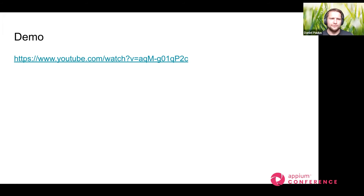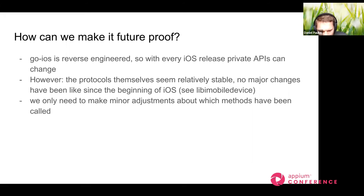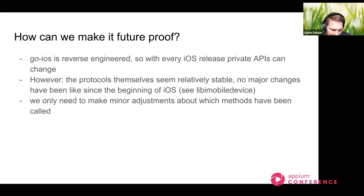How can we make this future-proof? Doesn't reverse engineering mean every iOS release breaks everything? Kind of — with every iOS release Apple changes something and you have to make some modifications. But the positive thing is that the protocols underneath — the property list stuff and the DTX protocol — are relatively stable. I think there have been no changes at all since the beginning of iOS. Since iOS 9, nothing has changed in libimobiledevice either. So basically, similar to private APIs, if they rename or refactor something you'll have to make those adjustments.